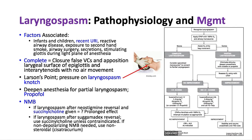The last keyword is laryngospasm — pathophysiology and management. Factors associated with laryngospasm include infants and children, recent URI, reactive airway disease, secondhand smoke exposure, airway surgery, lots of secretions, and stimulation of the airway under a light plane of anesthesia. Complete laryngospasm involves closure of the false vocal cords and apposition of the laryngeal surface of the epiglottis and interarytenoids, with absolutely no air movement.